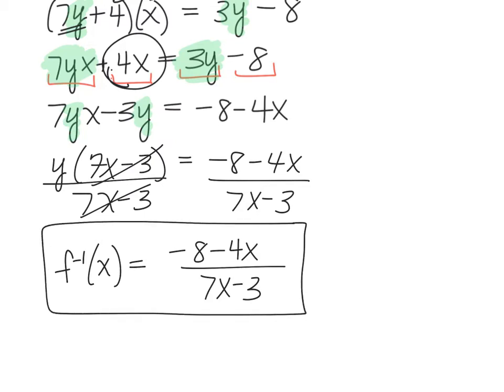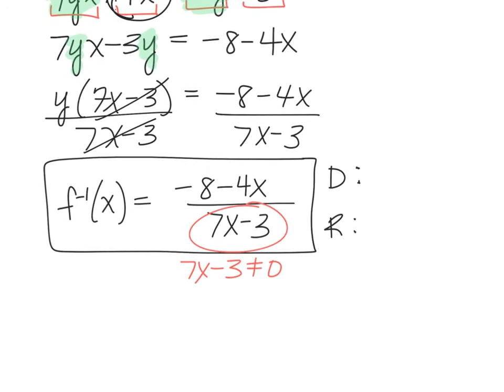So then we also want to find the domain and the range for this inverse. Let's start with the domain of this inverse. Because we have a fraction, we know that the denominator of a fraction cannot equal 0. So we'll set 7x minus 3 equal to 0 and solve, and that'll tell me the value that I cannot have for x.